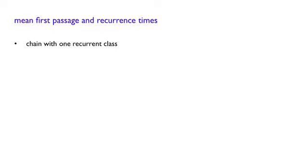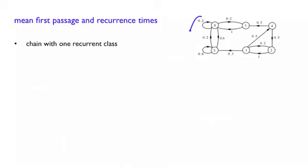This time, we suppose that we have a Markov chain composed of a single recurrent class, such as this one. Here we have our recurrent class, and these are transient states.